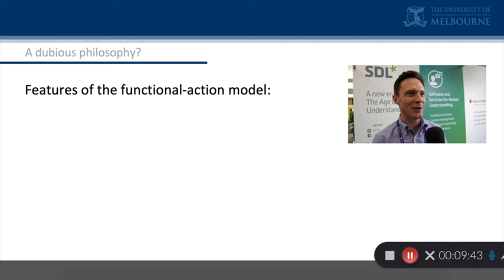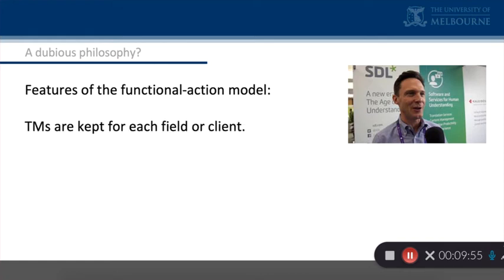If we look at the discourse around translation memories for what reflects the functional action type model — imagining what's normal to say in the new scene — the only thing we can find is the recommendation, and a very good one, that your assets — your translation memories and glossaries — should be stored for each field you're working in, or indeed for each client, since clients tend to work in the same field. You might want to break it up into different fields for a very big client. Why? Because the way you translate does depend on context, and context can be generalized and formalized in the way we construct our databases — that is, the translation memories or glossaries.